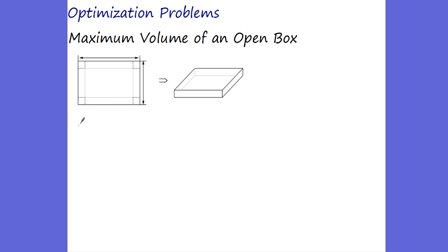Let's go to the second problem. This is a very, very famous problem — you've probably seen it in pre-calculus, algebra 2, and geometry. It just keeps showing up. They want you to solve it with geometry, then with algebra. Guess what? Calculus is the easiest way to solve it. We're trying to find the maximum volume of an open box when we cut small squares of side X from each corner. Let's say our piece of paper is 30 by 20 inches. We want to make the maximum volume — right away you say optimization.